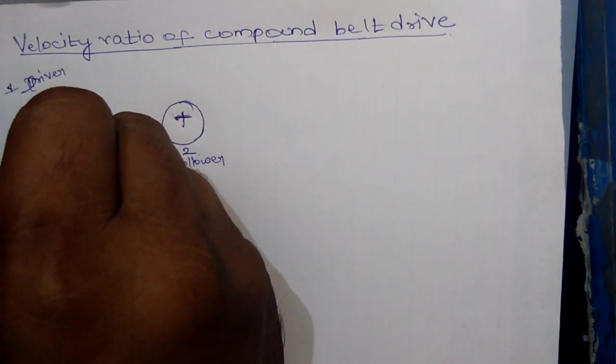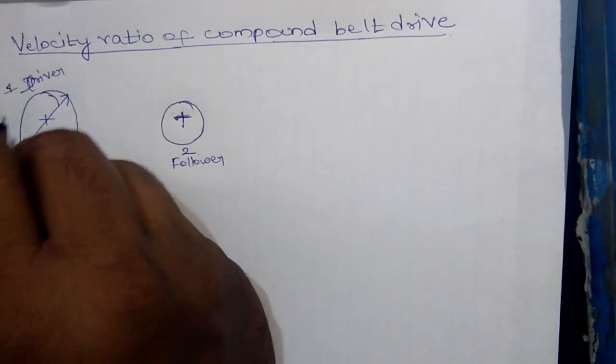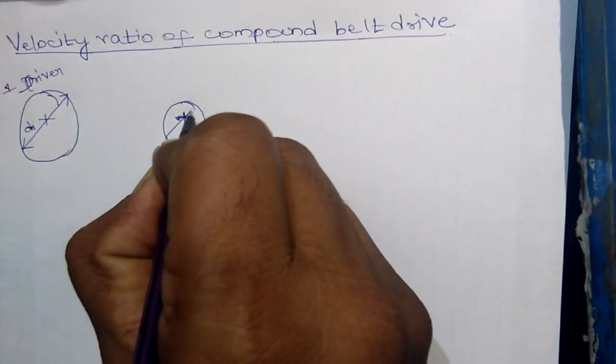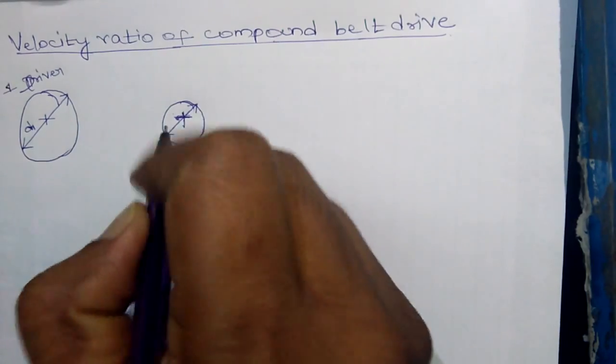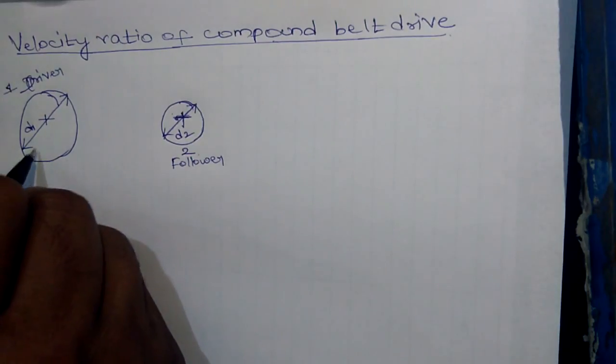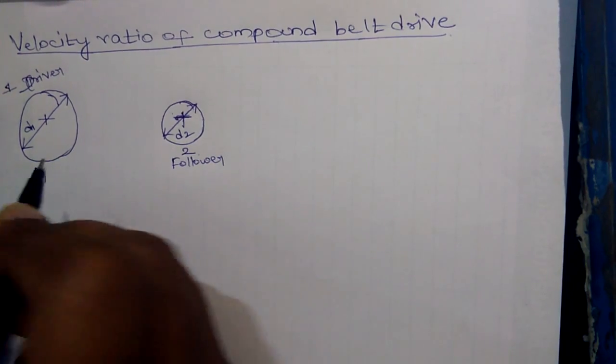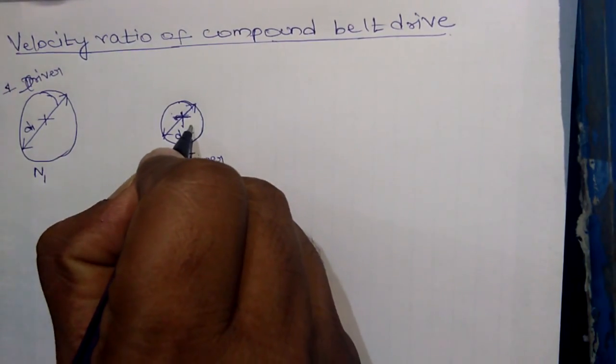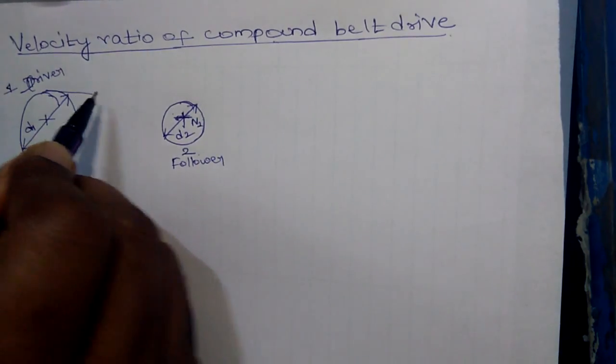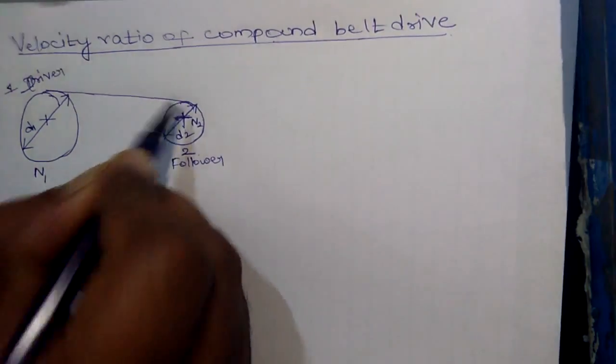The diameter of the pulley is d1 and the diameter of the follower pulley is d2. The speed of the driver pulley is n1 and the speed of the follower pulley is n2. And both the pulleys are connected by an open belt drive.